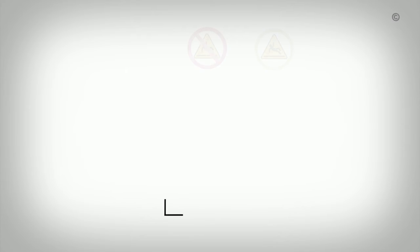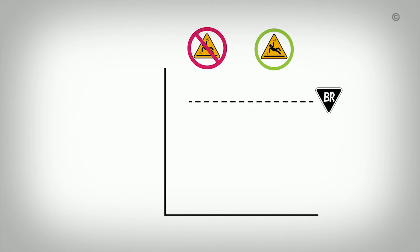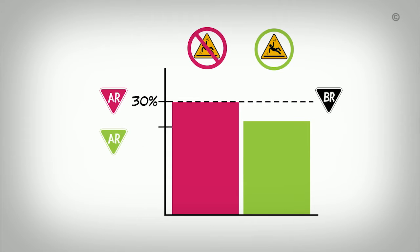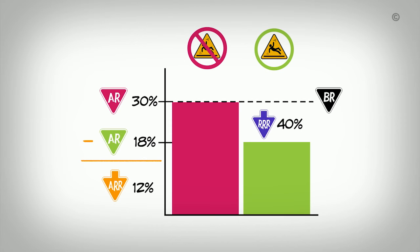These three statistics present the effect of an intervention in different ways; all provide useful information, and together give a more complete understanding of an intervention's impact. To summarize: the baseline risk for a fracture in both groups is 30%, the absolute risk in the control group is also 30%, the intervention reduces the risk for a fracture by 12% (ARR), and reduces the relative risk for a fracture by 40% (RRR) among those in the intervention group compared to no intervention.